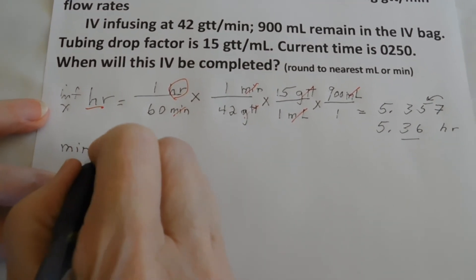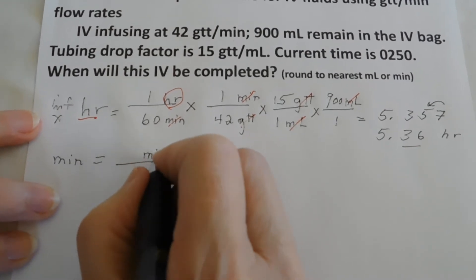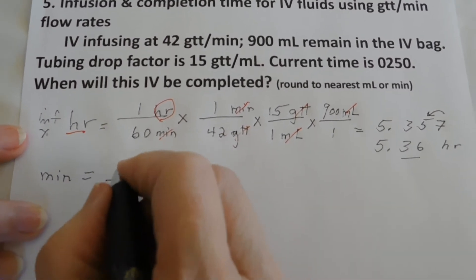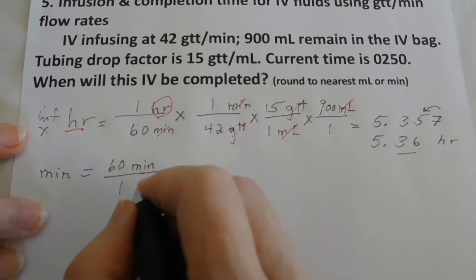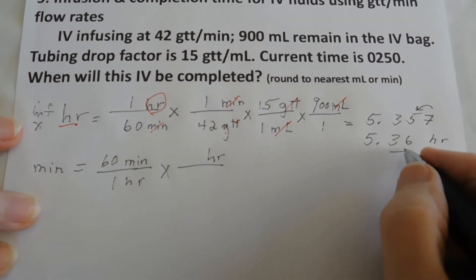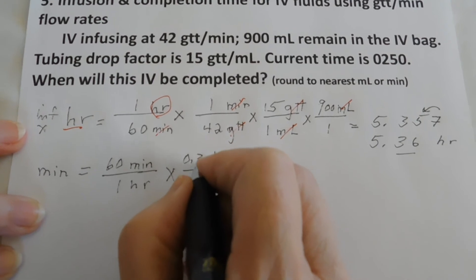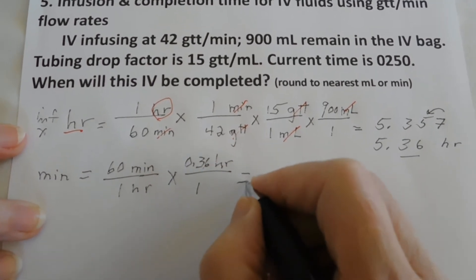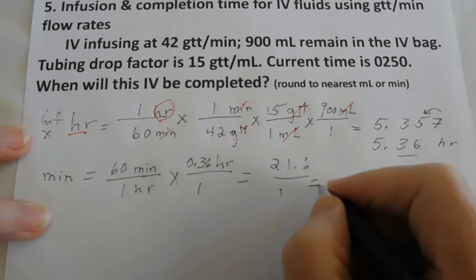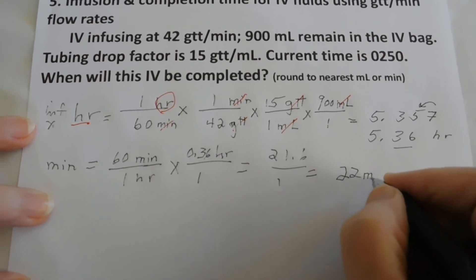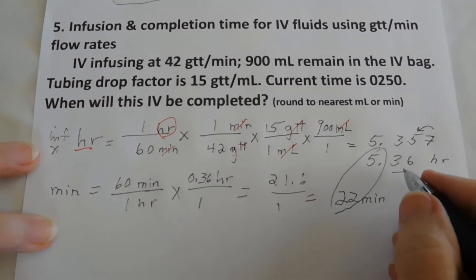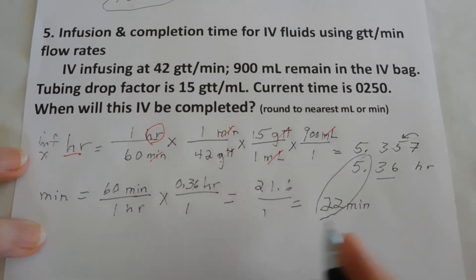So minutes equals. Minutes will go on top. We don't have anything with minutes. We have hours. So we will use a conversion factor. So 60 minutes is one hour. Multiply. Put hours up here. Now we have a given quantity of .36. We're ready to solve. We're ready to solve. And that ends up to be 21.6 over 1, which equals 22 minutes. So we have 5 hours and 22 minutes. And what is 5 hours and 22 minutes? That is our infusion time.